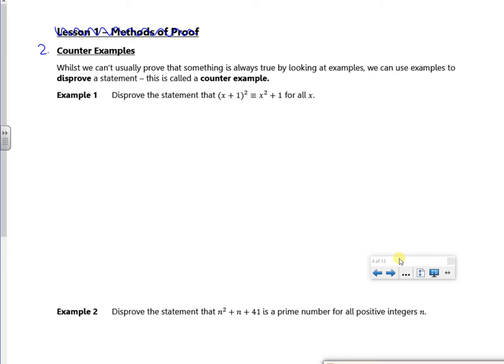So it says disprove the statement that (x+1)² = x²+1. So let's try a value, let's try x is one. So the left-hand side is (x+1) all squared. So that would be (1+1)², so (x+1)² would be 2², so (x+1)² would be four.